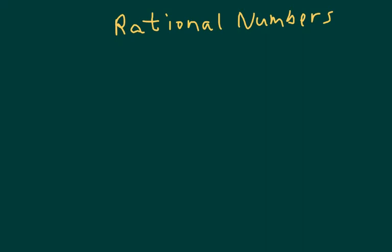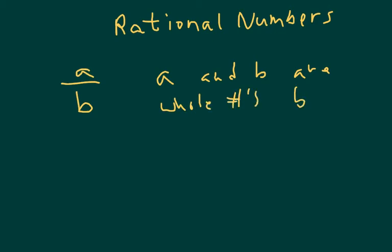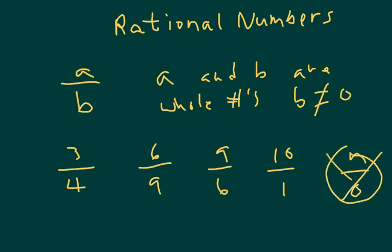Rational numbers, another term for rational numbers that would make sense is fractions. Rational numbers can be expressed as a over b, where a and b are whole numbers, and b cannot be zero because you can't divide by zero. So examples of rational numbers would be three over four, six over nine, nine over six. You can have ten over one, but you can't have any number over zero. This definition kind of excludes negative numbers being in fractions, but you really can have a negative fraction. But typically when we talk about rational numbers, we're talking about a and b being whole numbers.